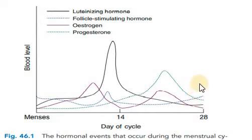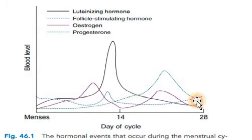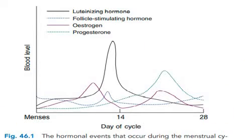If fertilization does not occur, then the effects decline and there will be release of the ovum from the body. It doesn't implant in the uterus, leading to the shedding of the endometrial layers — that is the start of menstruation.